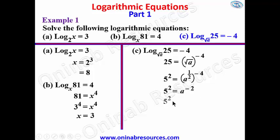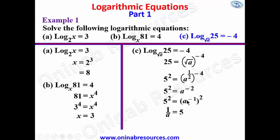So we have 5 squared equal to a to the power of negative 2. Since the indices are equal — we have 2 on both sides — we get 1 over a equal to 5, since a to the power of negative 1 is 1 over a. Therefore a is equal to 1 over 5. We have done justice to example 1.